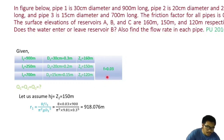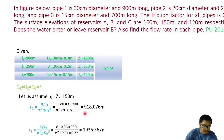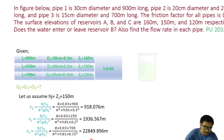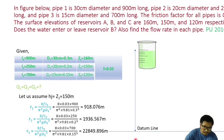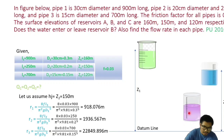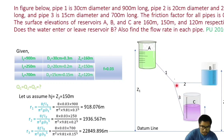The formula to calculate R1 is 8fL1 divided by pi-squared times g times d1 raised to power 5. Here f is 0.03, length is 900 meter, g is 9.81, and d1 is 0.3 meter. Similarly we calculate R2 and R3. The figure shows reservoir A with elevation Z1, reservoir B with Z2, and reservoir C with Z3, connected through pipe 1, pipe 2, and pipe 3 at junction J.